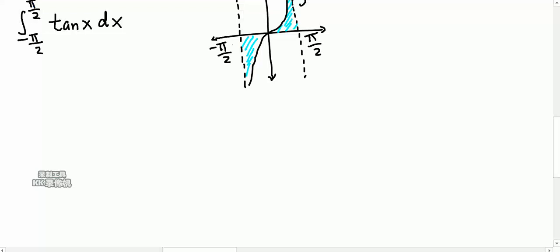So, firstly, it is going to be a limit. Actually, before we do the limit, let's just write them out. So it's negative pi over 2 to 0, right? Let's just find this part first, tangent of x dx, and then we add that to integral from 0 to pi by 2 of tangent of x dx.